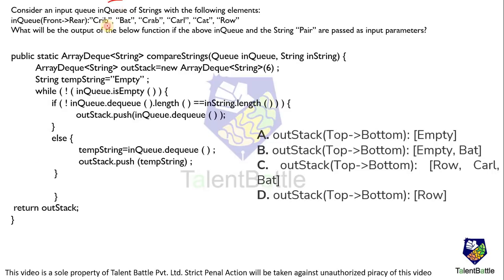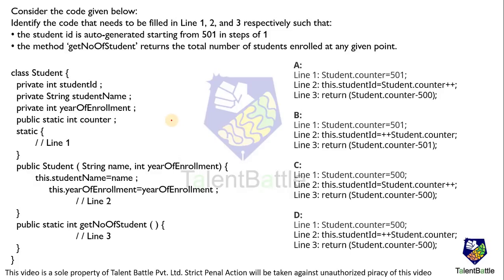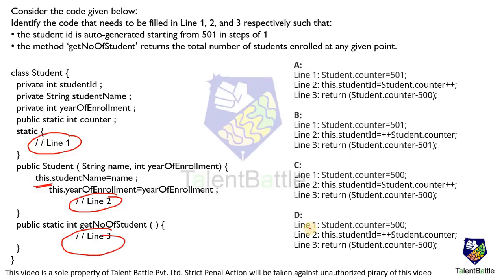This question was related to the queue data structure. If you understand the working of the queue - how an element is inserted, how an element is removed from the queue - then you can solve this question quickly. Another question is also related to functions. You have to identify what will be line number one, what will be line number two, and what will be line number three. So if you understand the flow mechanism - how a function works, which function will get called, how the data will be transferred from one function to another, and what is the use of the 'this' keyword in the entire code - then you can choose the proper answer related to that.